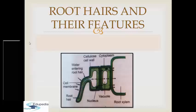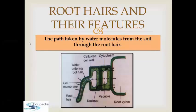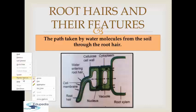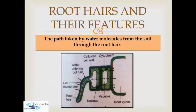In this image, you can notice the path taken by water molecules from the soil to the root hair. These are the root hairs, and the arrows show the direction of water entering the root hair. This is the cell membrane, this is the cellulose cell wall, here you can see the cytoplasm, this is the nucleus, and this is the root xylem. Water entering the root hair moves through the cytoplasm, through the cell wall, and finally reaches the root xylem. This is the path taken by water molecules from the soil through the root hair.